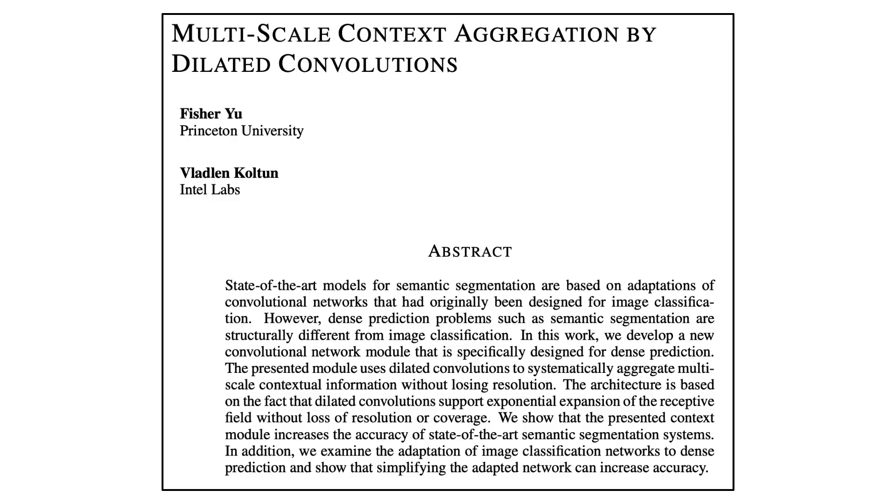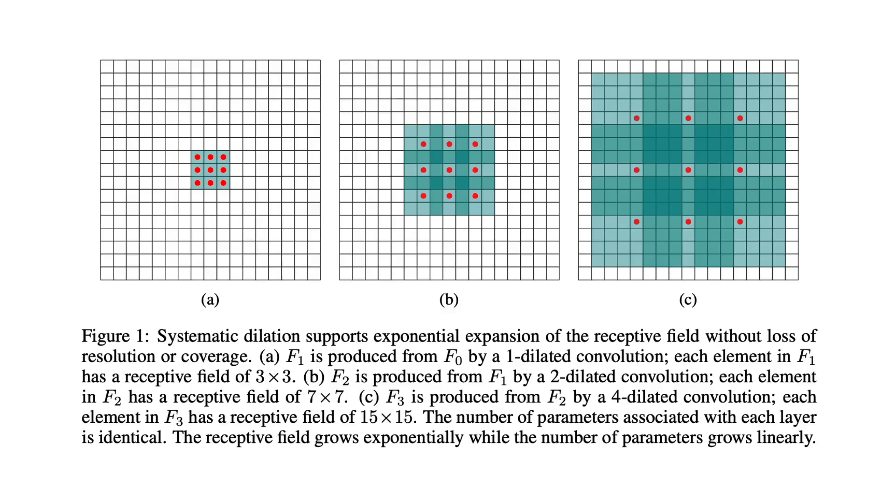The first item in the Reading List is the Multiscale Context Aggregation by Dilated Convolutions, which argued back in 2015, when this paper was written, that dense prediction problems, such as semantic segmentation, relied heavily on adaptations of convolutional neural networks that were originally designed for image classification. Thus, they introduced the dilated convolutions layer, which allows a faster expansion of CNN's receptive field without loss of resolution or coverage.